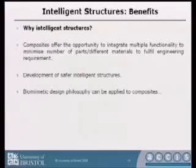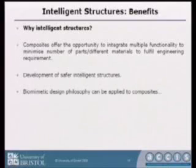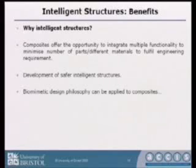So why do it? Why have intelligent structures? Well, composites — because of this ability to lay down different layers at different times — you can integrate more functionality. The functionality could minimise part count or enable different materials. You could also develop safer intelligent structures. By that I mean you start to put the interrogation system inside it and it can start to understand the load that's going through it and start to warn you when things are going wrong.